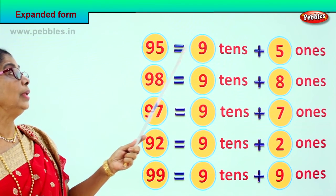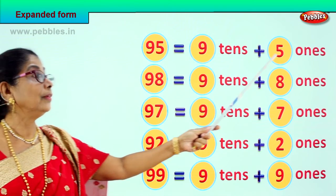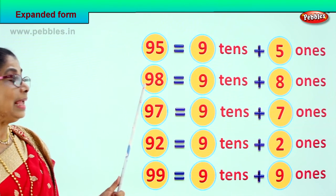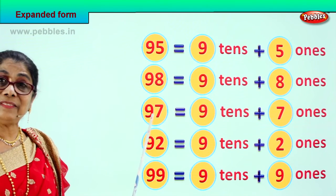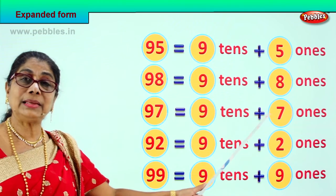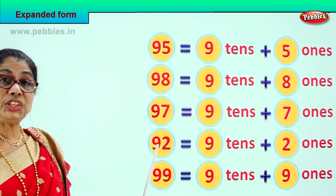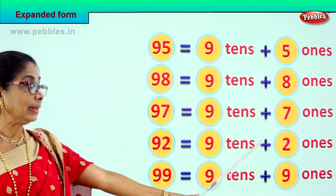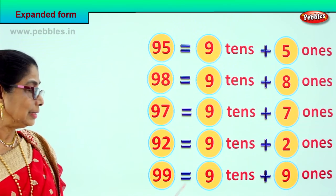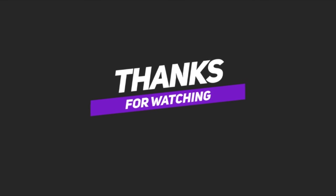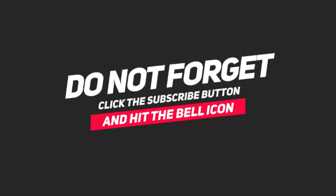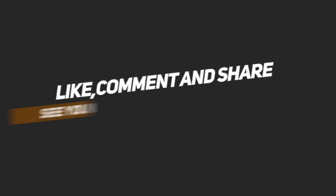Let's read together: 95 is equal to 9 tens plus 5 ones. 98 is equal to 9 tens plus 8 ones. 99 is equal to 9 tens plus 9 ones.